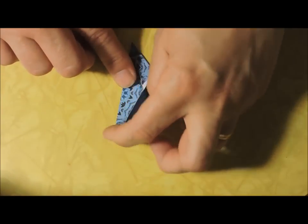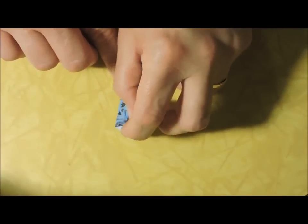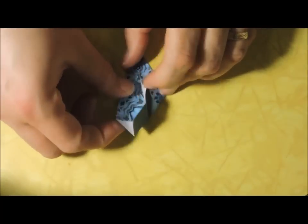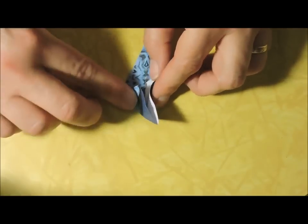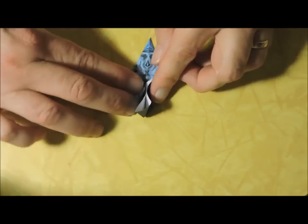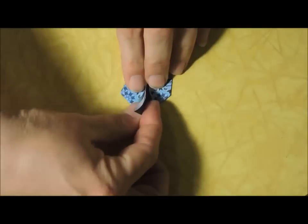This bottom layer, this corner comes down to the center and it just lines up right with that center line. So now you've got this piece sticking up, and I like to fold it both ways just to give it a crease.